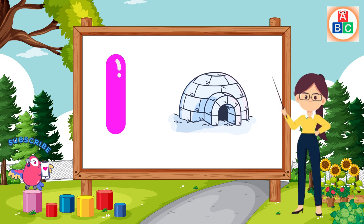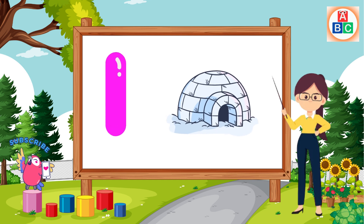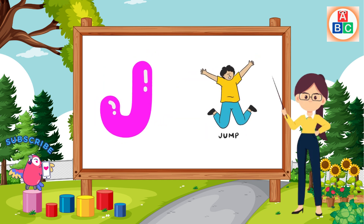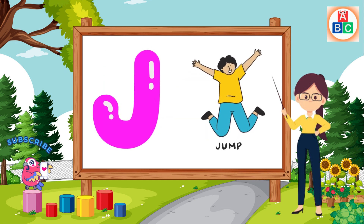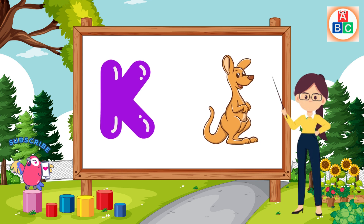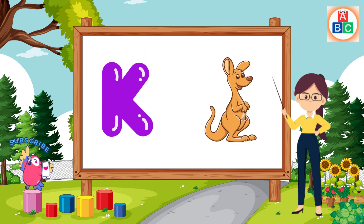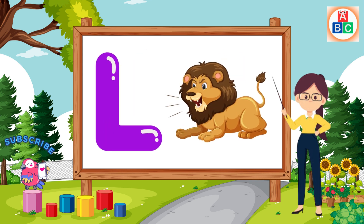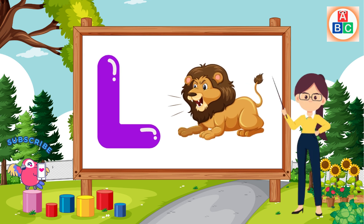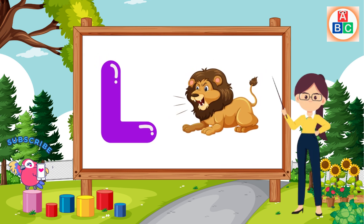I is for igloo, i-i-igloo. J is for jump, j-j-jump. K is for kangaroo, k-k-kangaroo. L is for lion, l-l-lion.